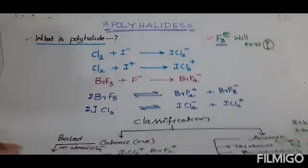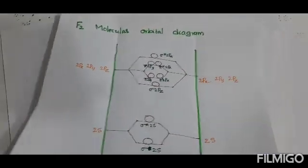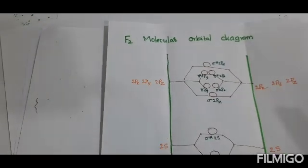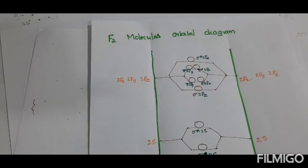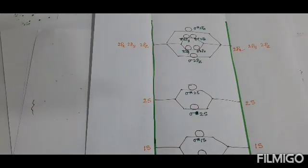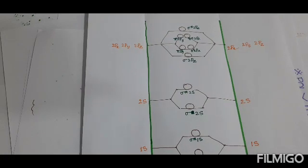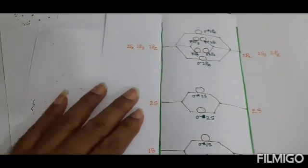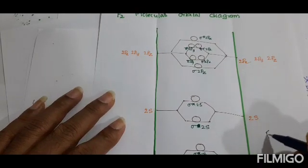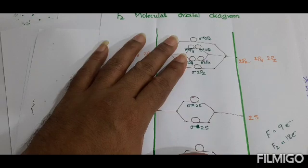To explain the concept of F3⁻ existence, students must have some awareness of the molecular orbital diagram of fluorine. I am going to explain F3⁻ existence with the help of the F2 molecular orbital diagram. First, observe the F2 molecular orbital diagram. I am taking the z-axis as the internuclear axis, and I want to distribute the electrons in this molecular orbital diagram.